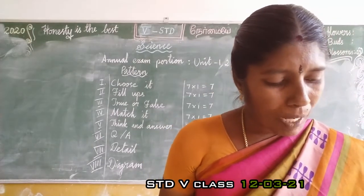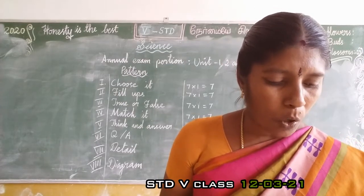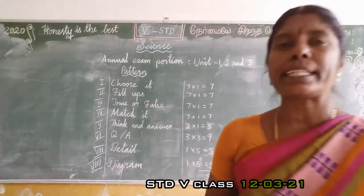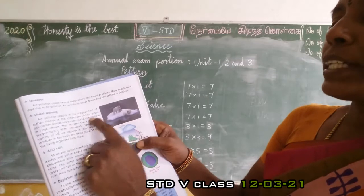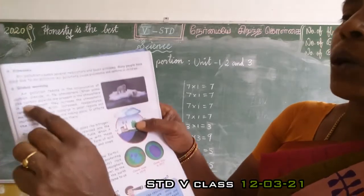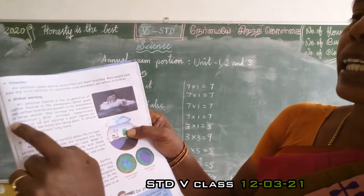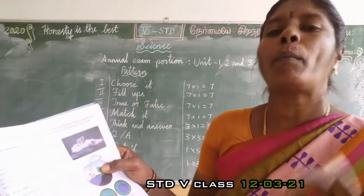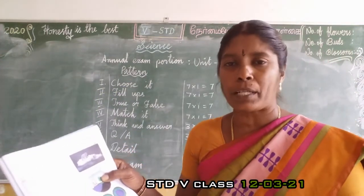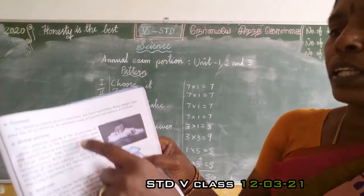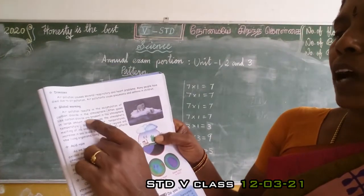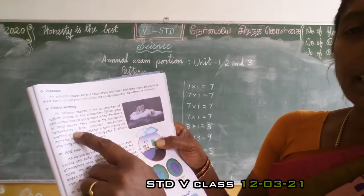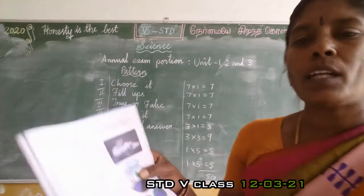What is global warming? Refer to book page number 101. When gases like carbon dioxide are present in the atmosphere in large amounts, they increase the atmospheric temperature. This is called global warming.